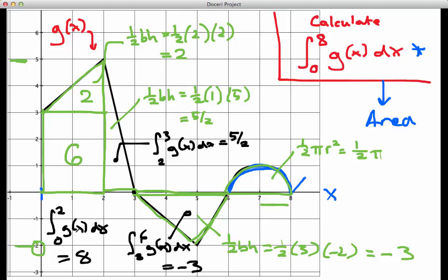Okay, and once again, just in the language of the integral, we would say that the integral from six to eight of g of x dx would be one half pi, which we also write as pi over two. So now on the next slide, we're just going to put all these areas together to get us the integral from zero to eight.